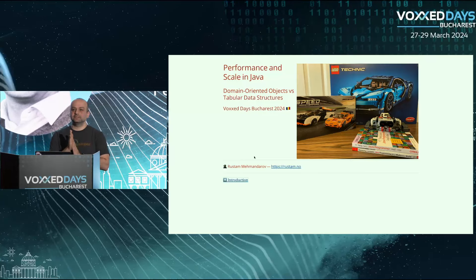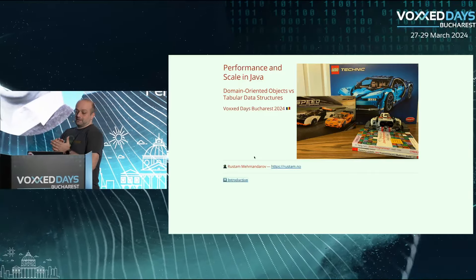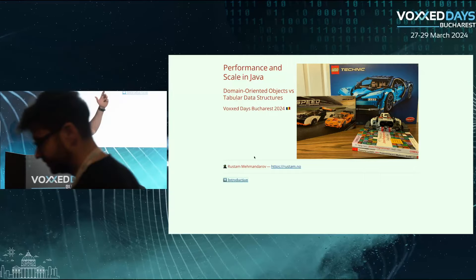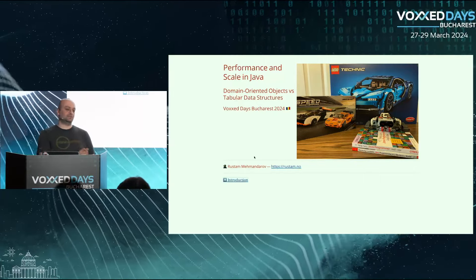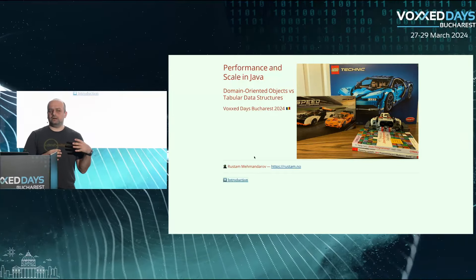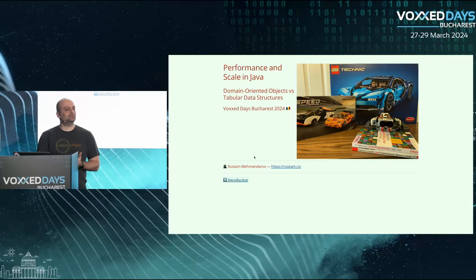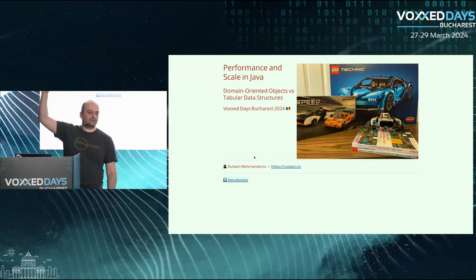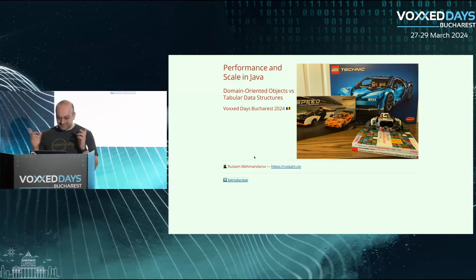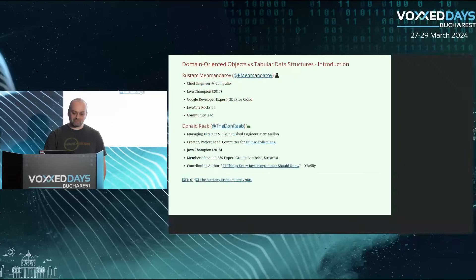Welcome to this talk. I'll talk to you about things you probably don't think about much normally — the difference between domain or object-oriented data structures and tabular data structures. How often do you write code and think about whether to use hash maps or linked lists, and how much memory they'll consume? Anyone does that every time they write code? Two people — nice. But most of us don't, and that's what we're going to talk about for the next hour.